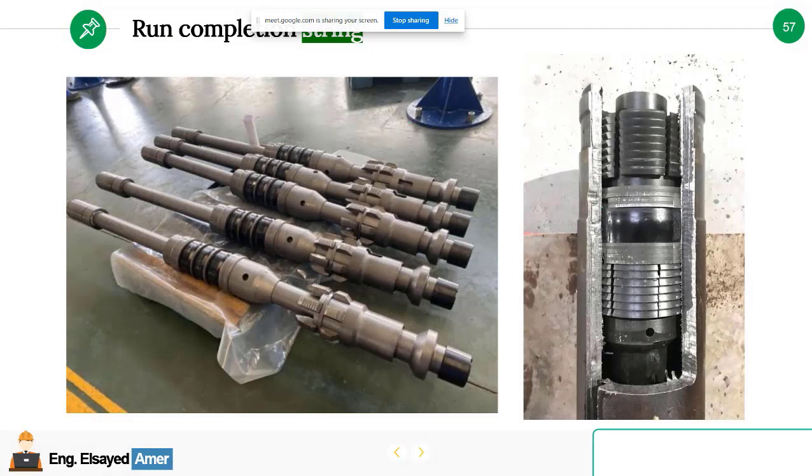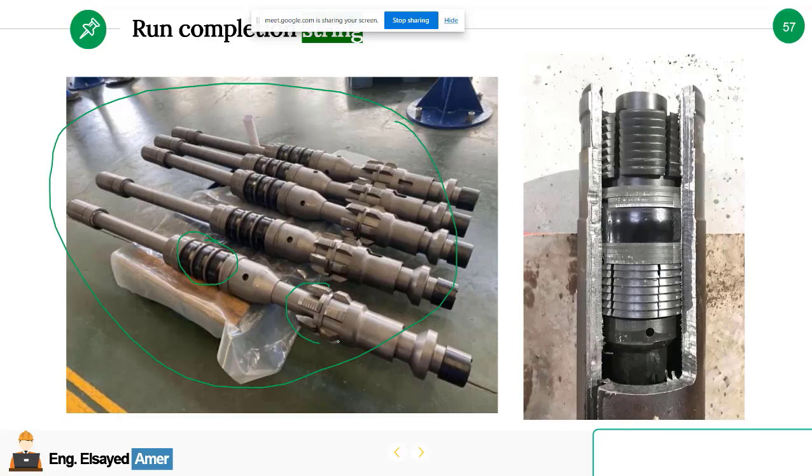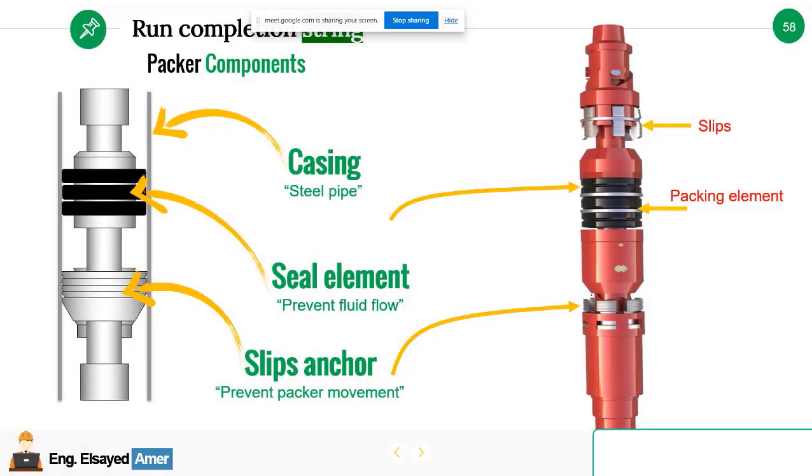This is the actual photo of the packer consisting of the sealing element and slips or dies. Slips or dies are used to make a metal to metal seal, metal to metal hanging, which is used to prevent any movement of the packer. When it's activated, it's hung into the casing and prevents any movement or further movement of the tubing or the completion string.